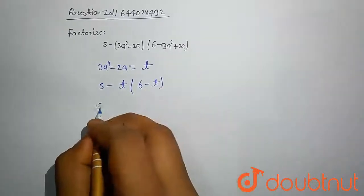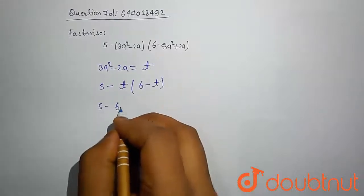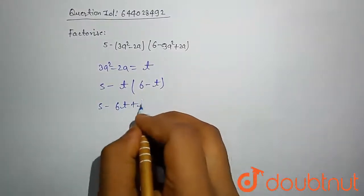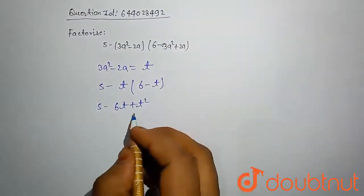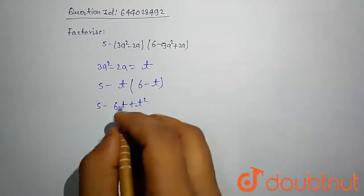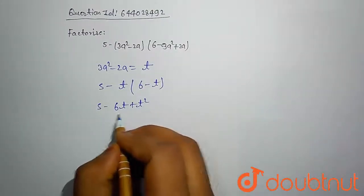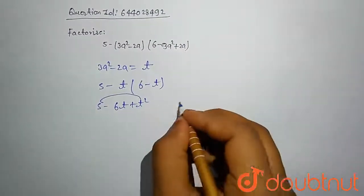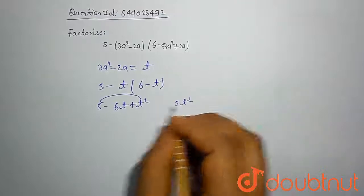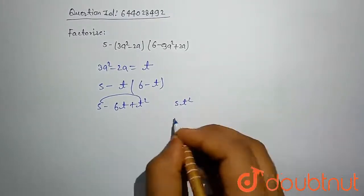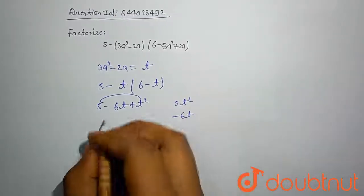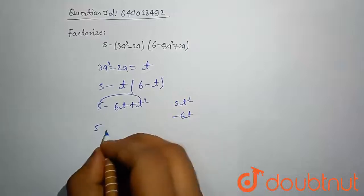Let's compute this: 5 minus 6t plus t^2. If I try it, multiplication of middle two terms is 5t^2 and summation is minus 6t.